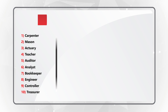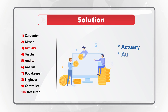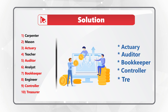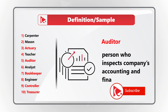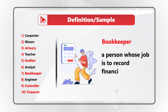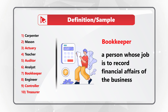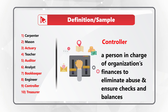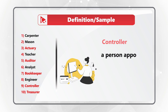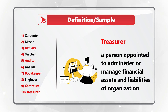I found 5 similar words: actuary, auditor, bookkeeper, controller, and treasurer. I believe these words are similar because they represent financial jobs in the organization. An actuary compiles and analyzes statistics to calculate risks. An auditor inspects company accounting and finance. A bookkeeper records financial affairs of the business. A controller manages the organization's finances to eliminate abuse and ensure checks and balances.